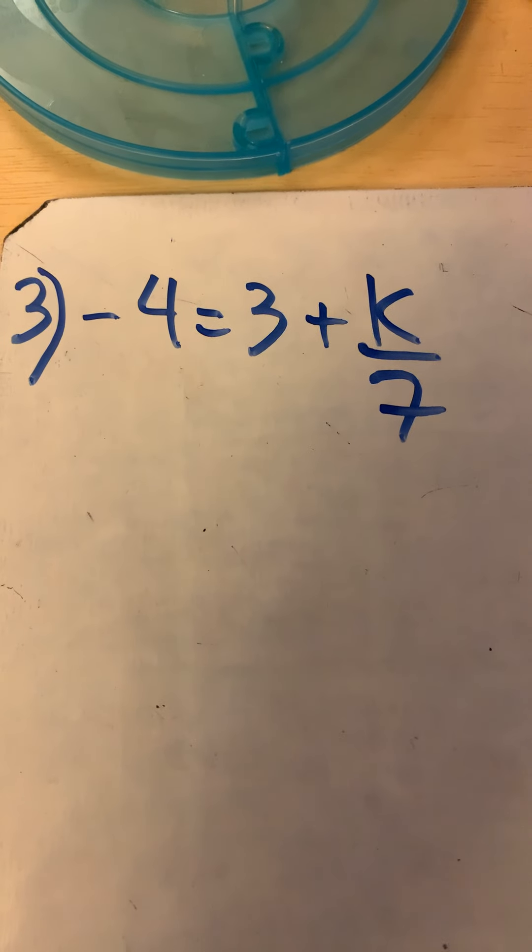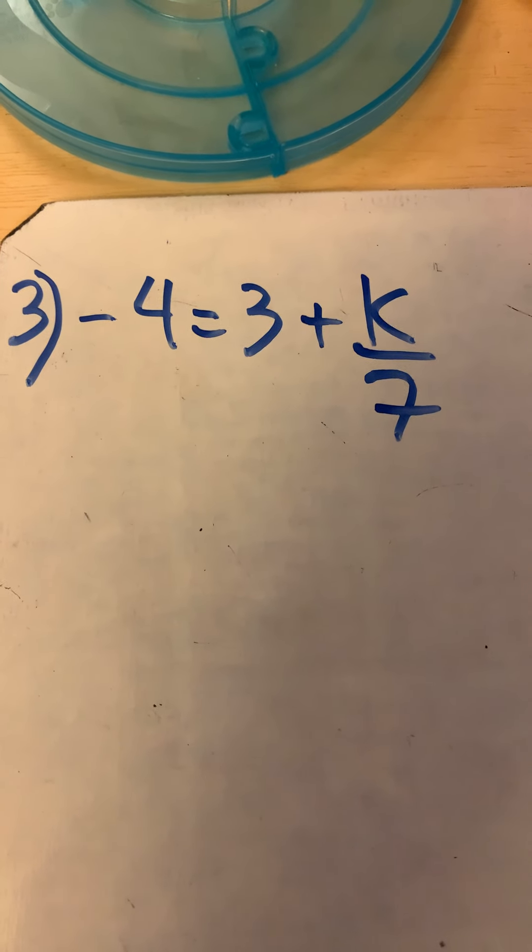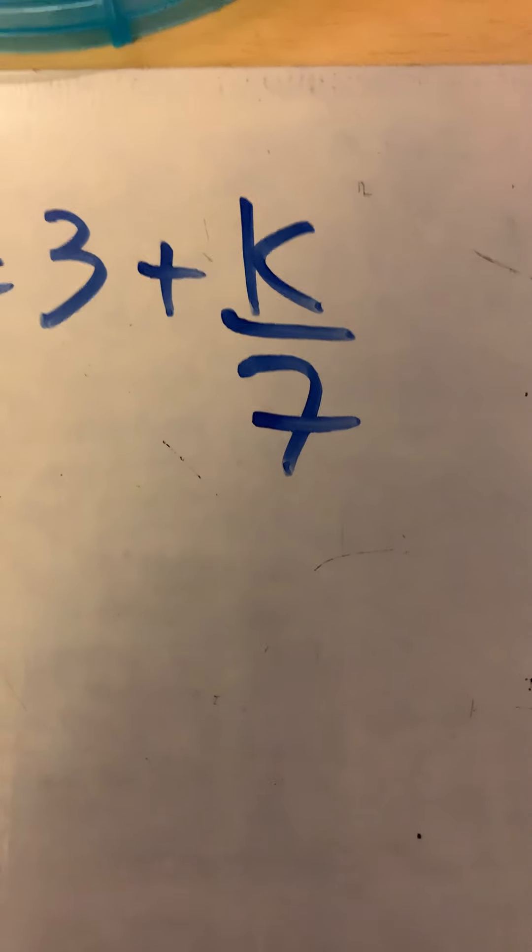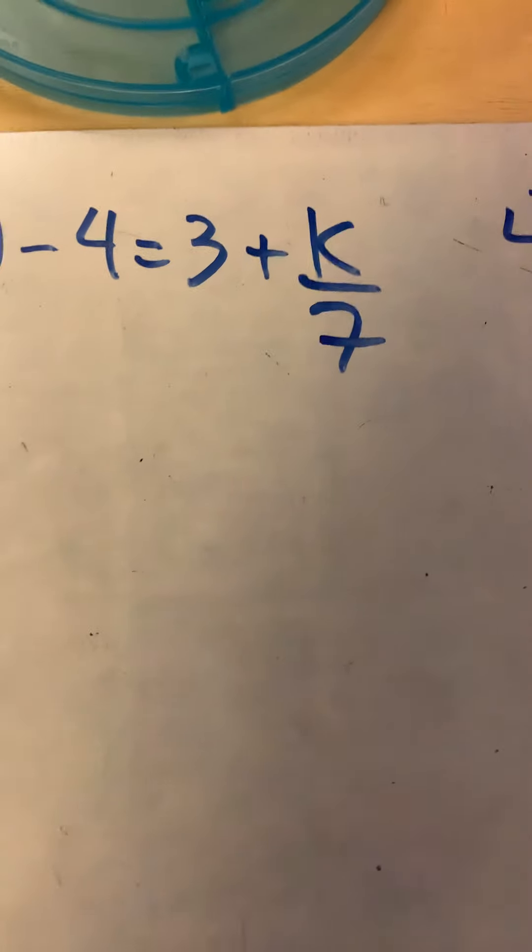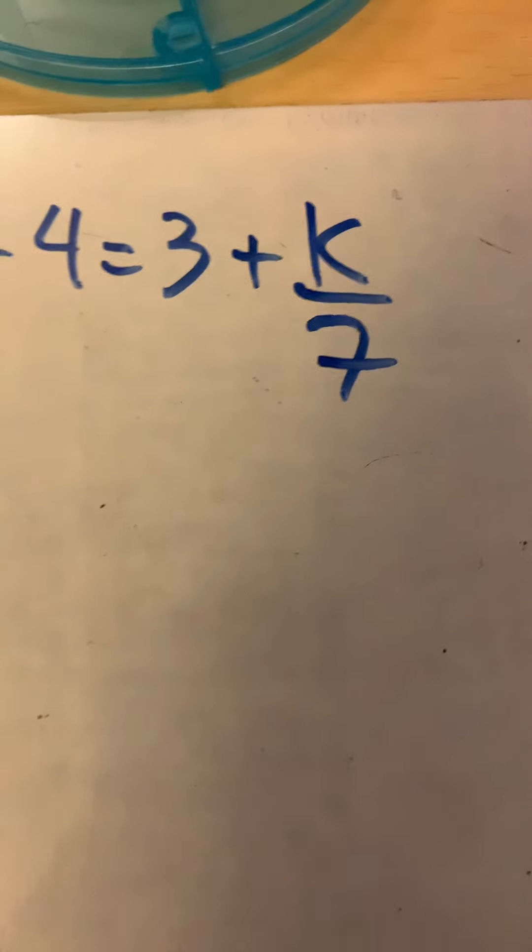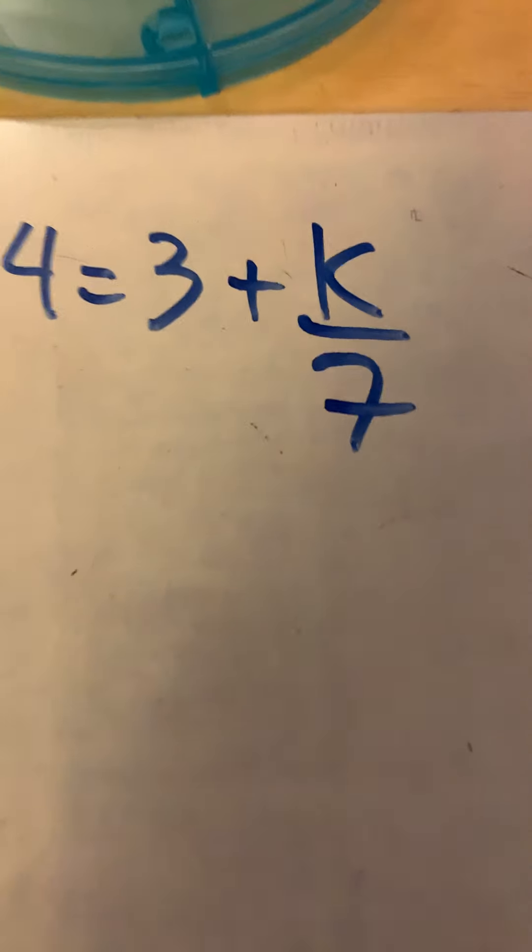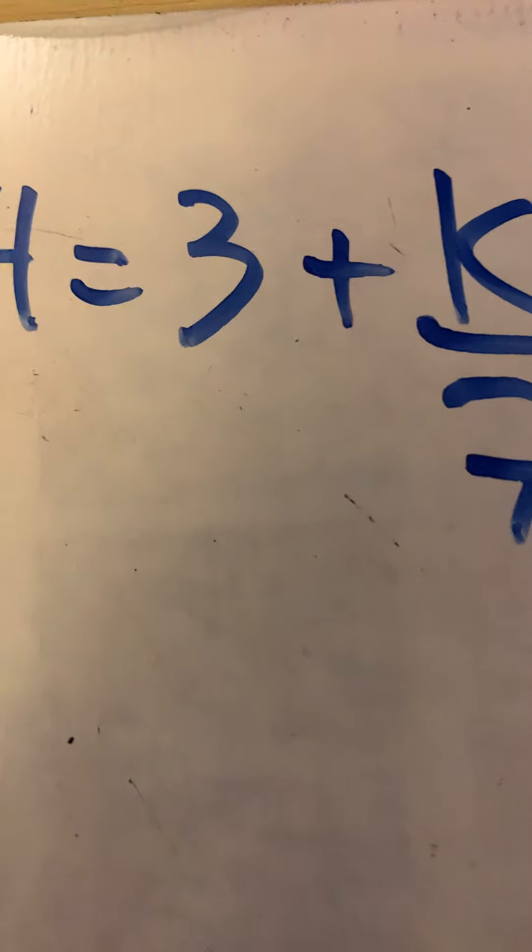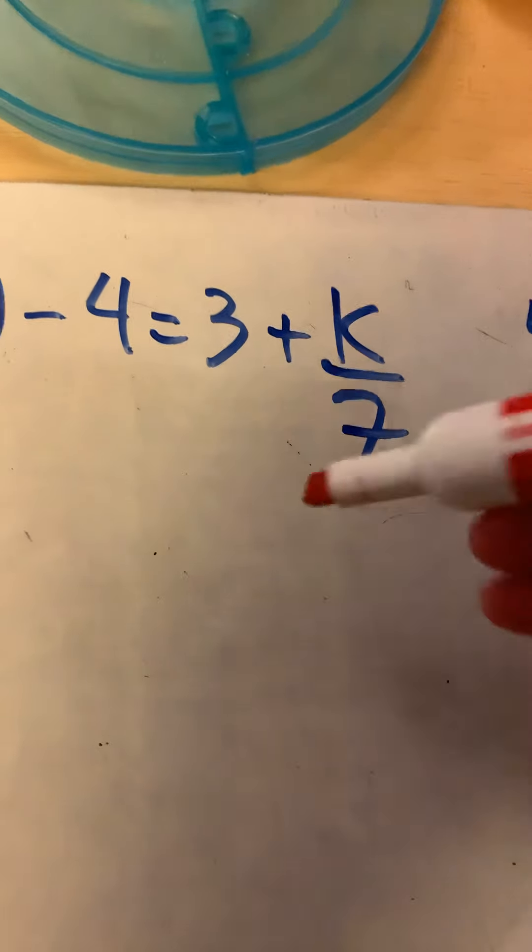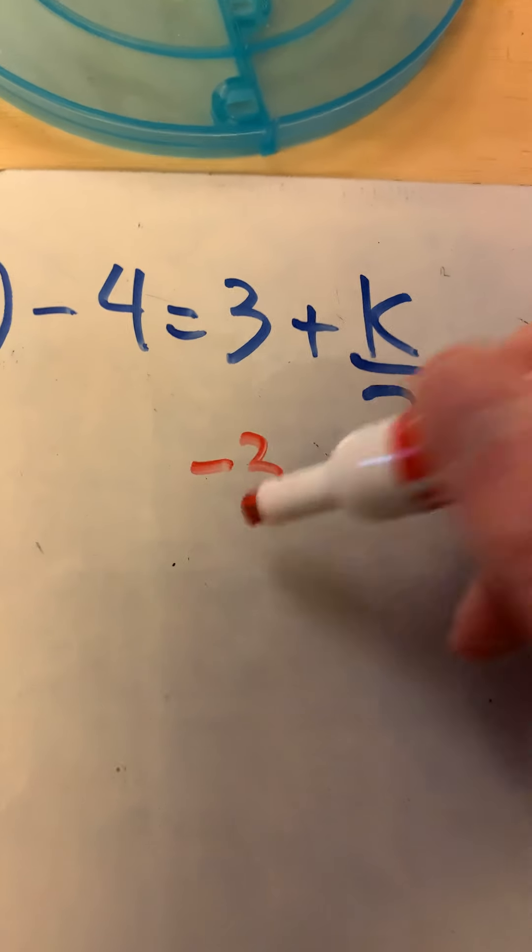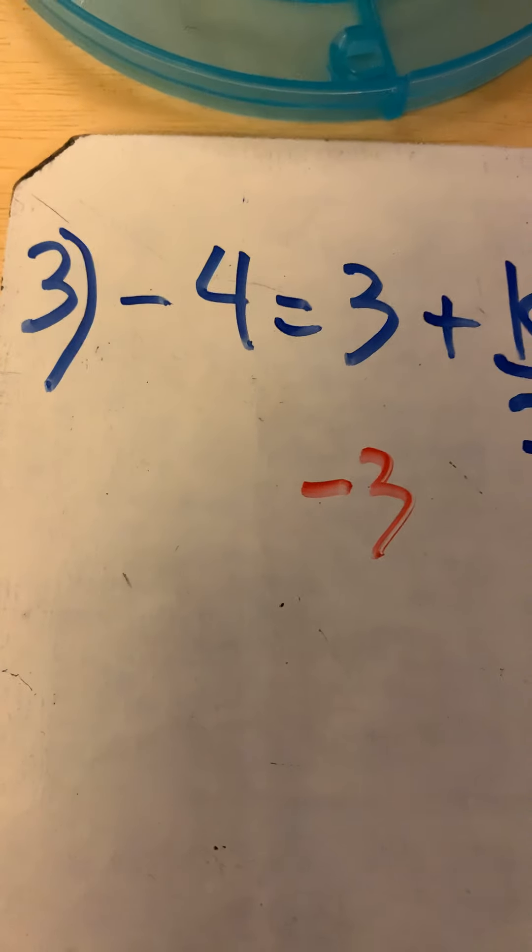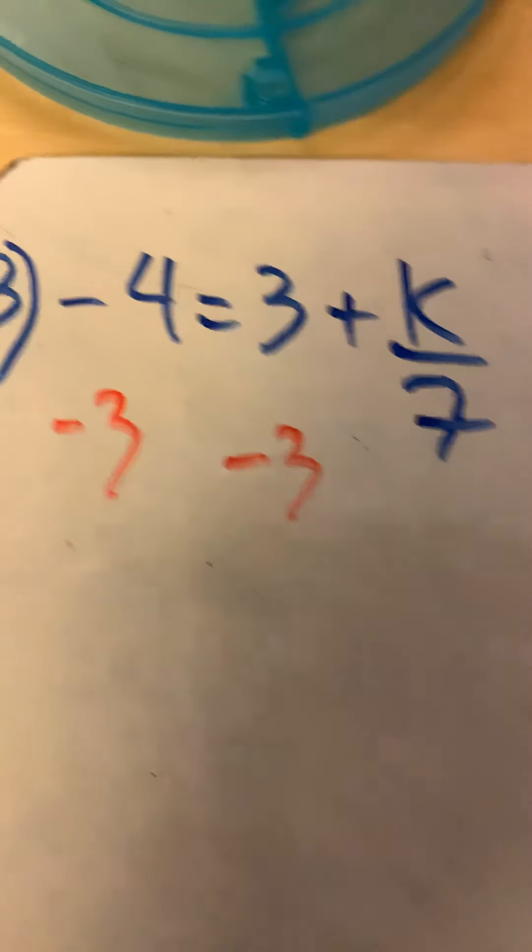The equation is -4 = 3 + k/7. Everything's done exactly the same here, except the variable is on the other side of the equal sign, and we want to try to keep it there. So we find the side that has the variable. We start with the add-subtract first. Now beside that variable, there's a plus three. We know it's a plus three because there's no sign in front of it. The opposite of plus three is minus three. If I do it to that side of the equal sign, I have to do it to the other side. -4 - 3.